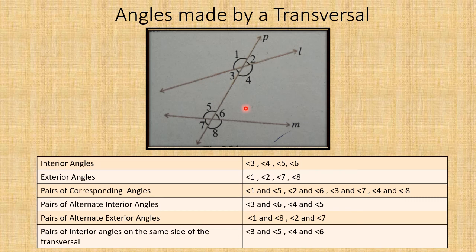I will teach you in a more detailed way about corresponding angles and alternate angles in my next session. Here I have just given you the names of corresponding angles and alternate angles formed when a transversal intersects two lines, giving us eight angles. I will explain further in my next class.